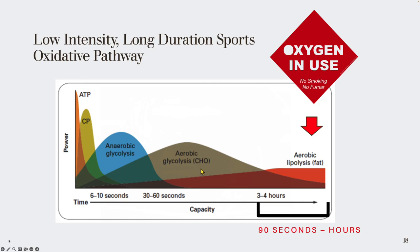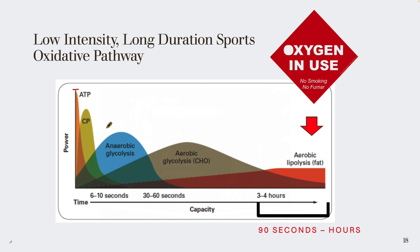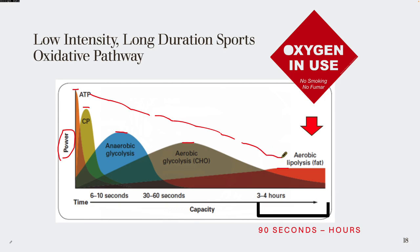Once we've done about 30 to 90 seconds of exercise at a lower intensity in this particular pathway, we shift into the aerobic pathway. You can see that each one of these begins to drop in height, meaning the power output is much lower. The intensity of exercise begins to drop over time as we get into these longer, more oxidative pathways.